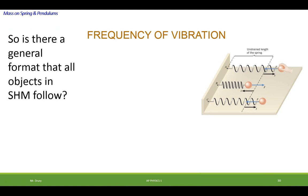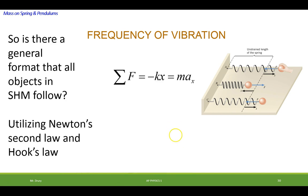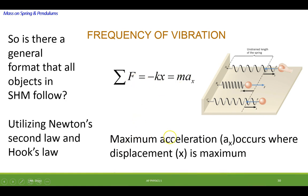So is there a general format that all objects in simple harmonic motion follow? Well, we can utilize Newton's second law and Hooke's law together. We know that the sum of the forces is equal to mass times acceleration, or the sum of the forces is equal to kx for Hooke's law. So these two actually must be equal to each other. The maximum acceleration occurs where the displacement is maximum, as we discussed before. So wherever we have maximum acceleration, we have maximum displacement. So let's see how we can use that.